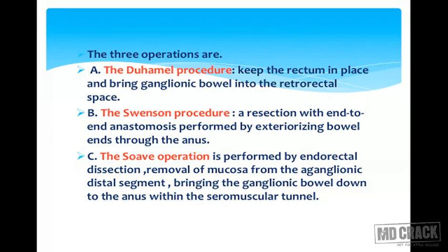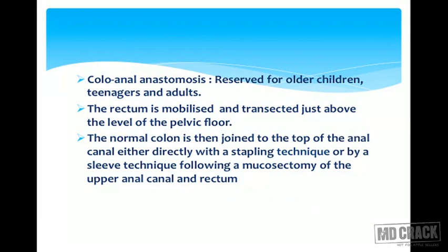The three procedures are: Duhamel's procedure — keep the rectum in place and bring ganglionic bowel into the retro-rectal space; Swenson's procedure — resection with end-to-end anastomosis performed by exteriorizing the bowel ends through the anus; and Soave's procedure — performed by endorectal dissection, removing the mucosa from the aganglionic distal segment, bringing the ganglionic segment down to the anus within a seromuscular tunnel.